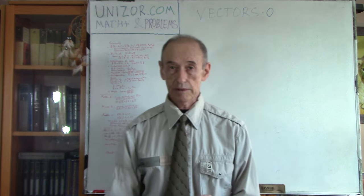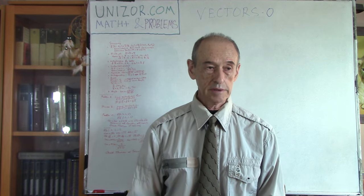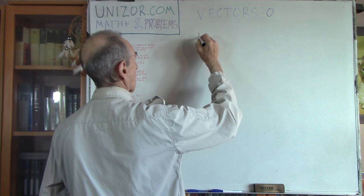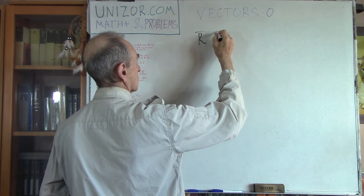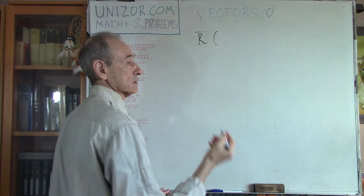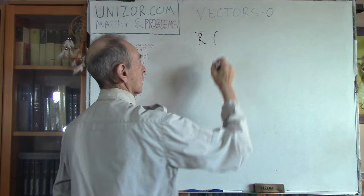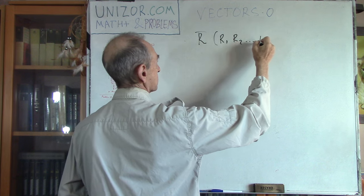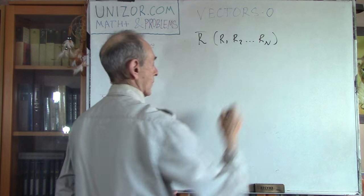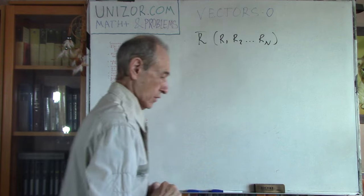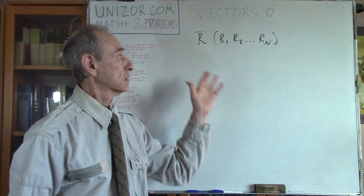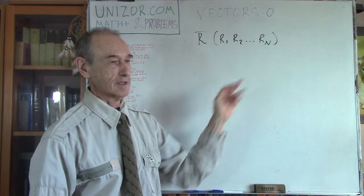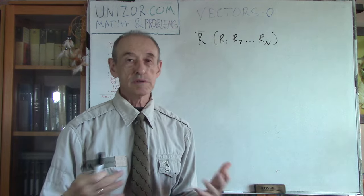So, summary of whatever we know about n-dimensional vectors. First of all, n-dimensional vectors are just an ordered set of n real numbers. With this set of n numbers, we do certain manipulations, and the first thing we do is addition.